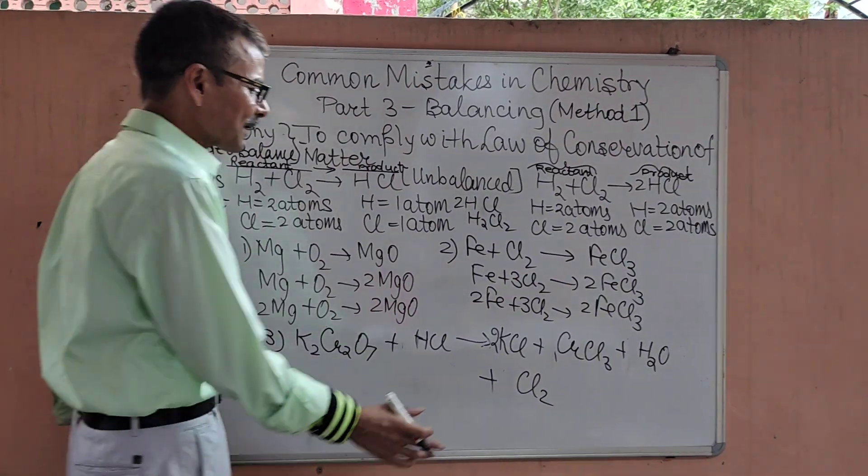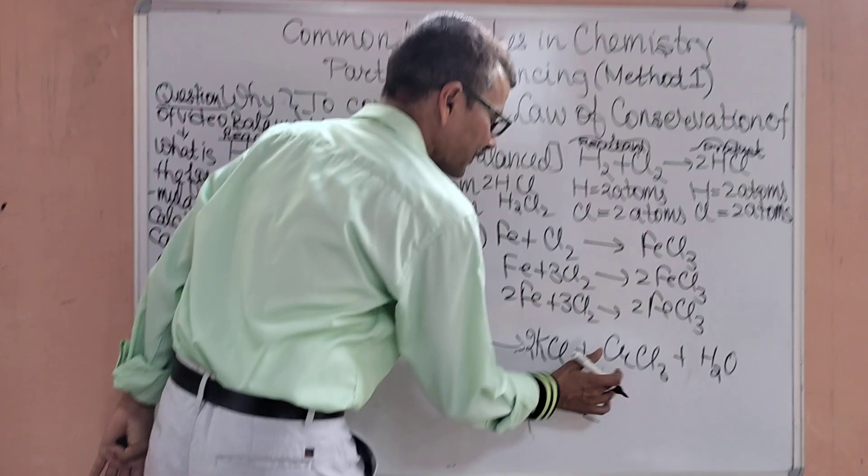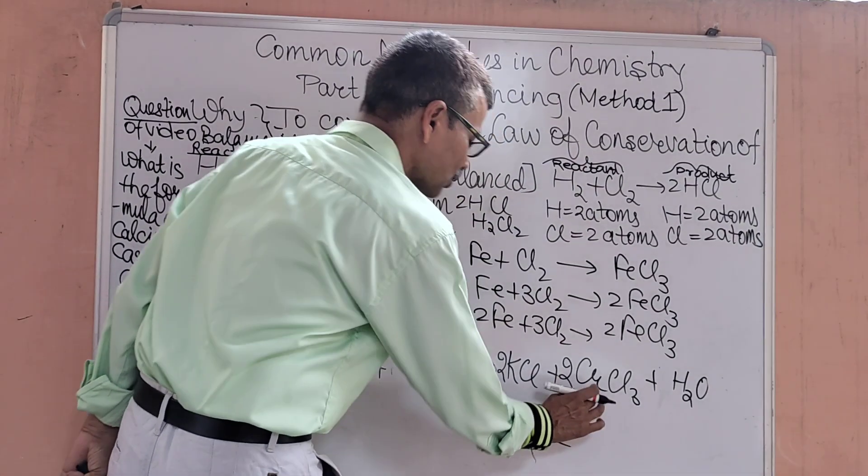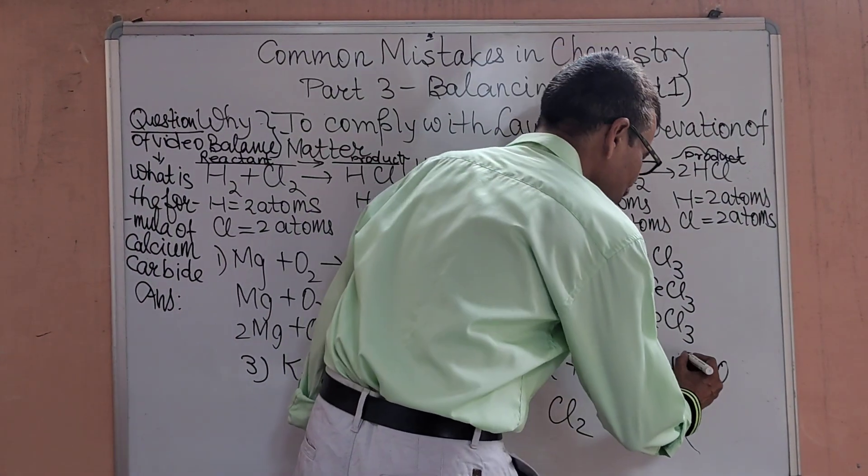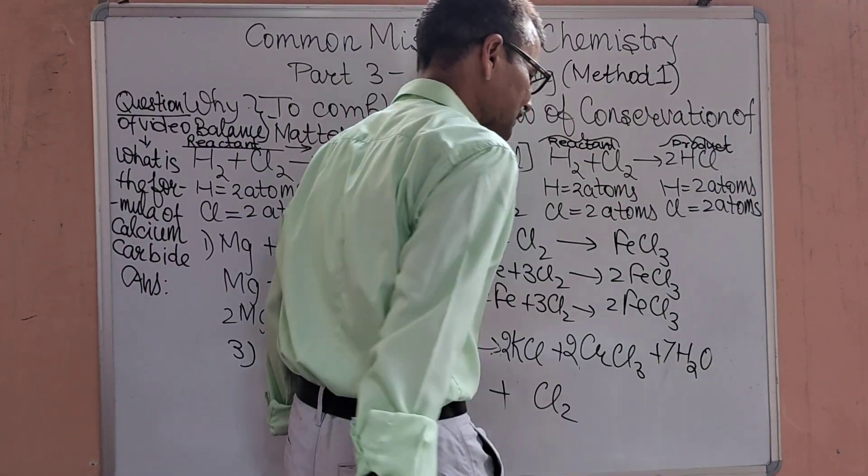Chromium here is 2, we multiply the product chromium chloride by 2 and our chromium is also balanced. Oxygen is 7 atoms here, we multiply the H2O by 7 and the oxygen is balanced.